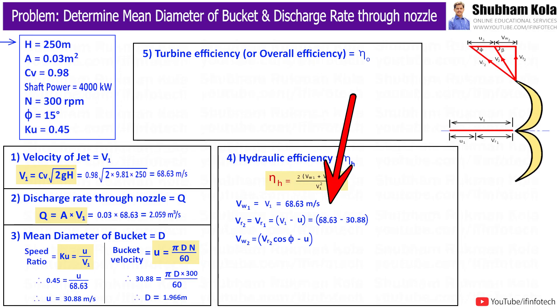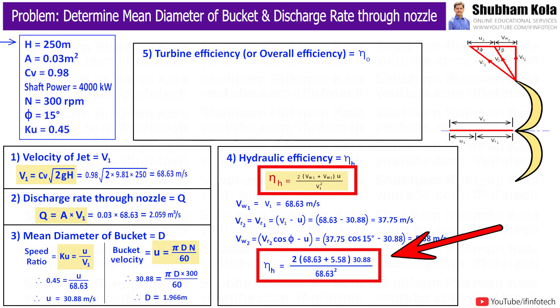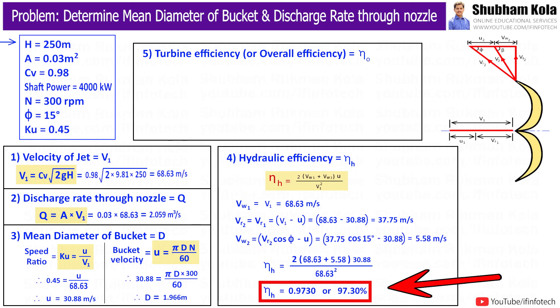And here, we had already calculated values of velocity of jet V1 and bucket speed small u. So, this will give me the value of Vr2 as 37.75 m per second. And after substituting all these values, we will get value of VW2, 5.58 m per second. Therefore, to calculate hydraulic efficiency of turbine ηh, we will substitute all these calculated values. So, it will give me the value of hydraulic efficiency.